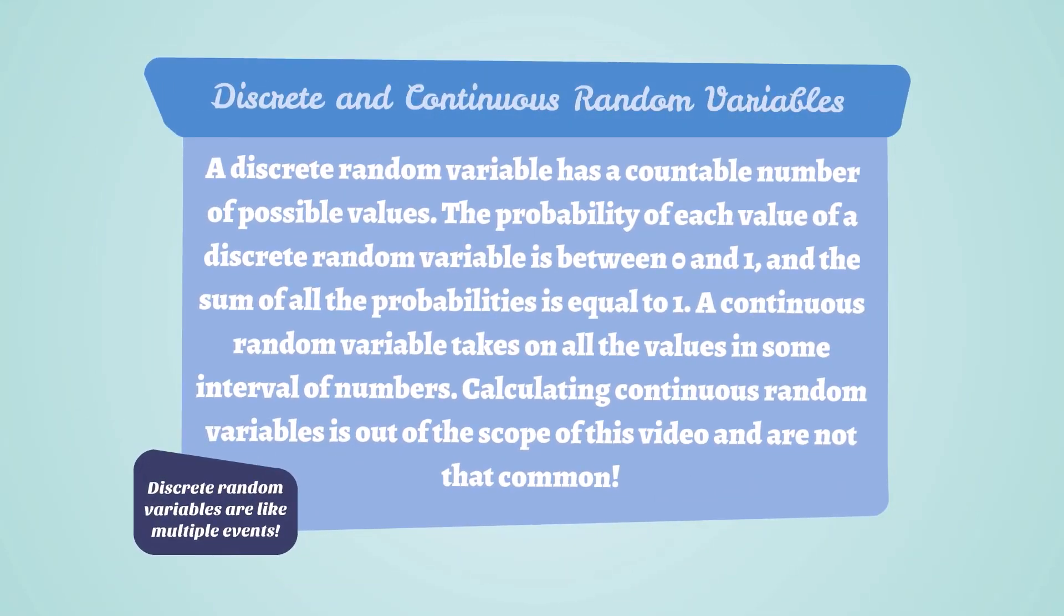Discrete and Continuous Random Variables. A discrete random variable has a countable number of possible values. The probability of each value of a discrete random variable is between 0 and 1, and the sum of all the probabilities is equal to 1. A continuous random variable takes on all the values in some interval of numbers. Calculating continuous random variables is out of the scope of this video and are not that common. Discrete random variables are like multiple events.